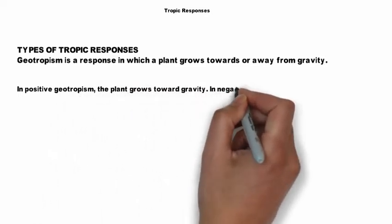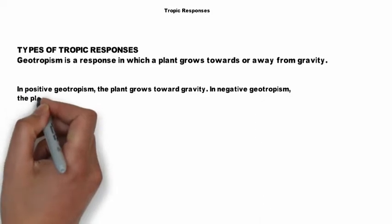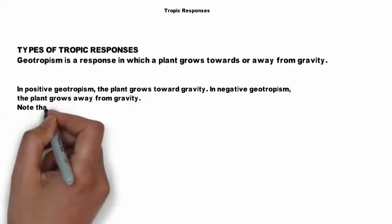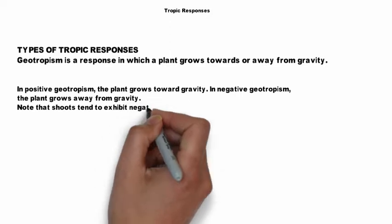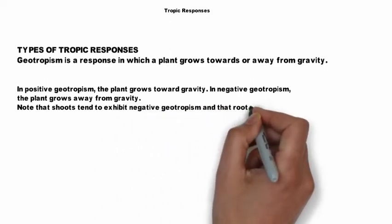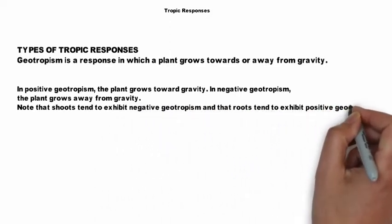In negative geotropism, the plant grows away from gravity. Note that shoots tend to exhibit negative geotropism and that roots tend to exhibit positive geotropism.